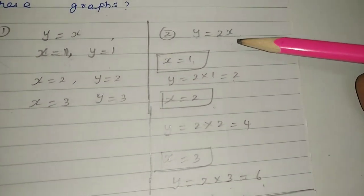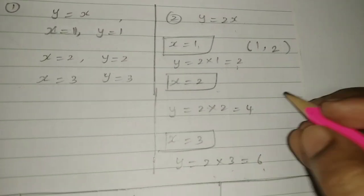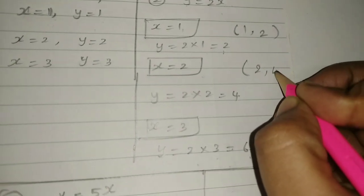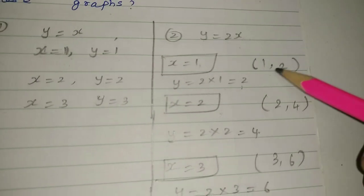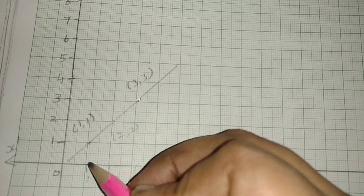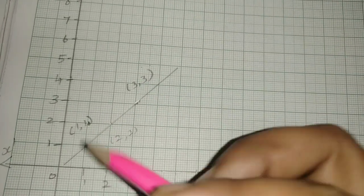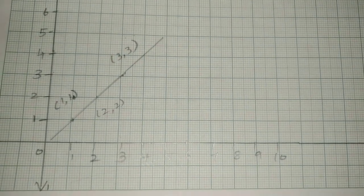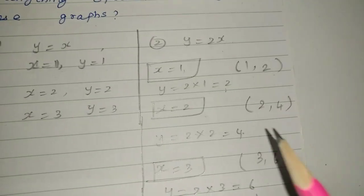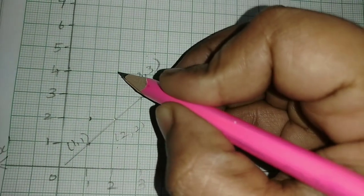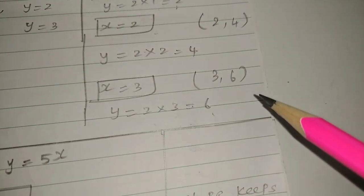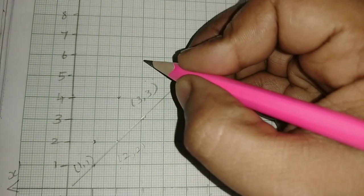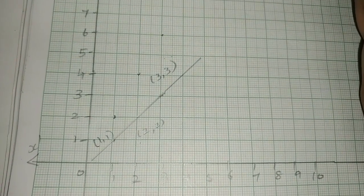For the second equation y = 2x: plot point x=1, y=2; then x=2, y=4; then x=3, y=6. Mark these set points on the graph and join them to form the line for the second equation.